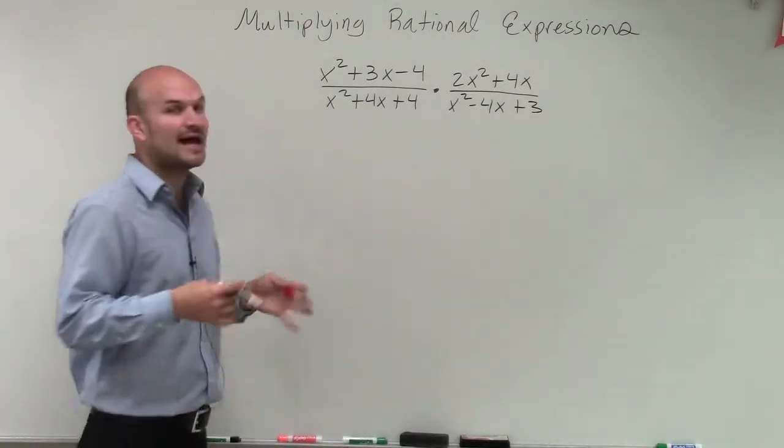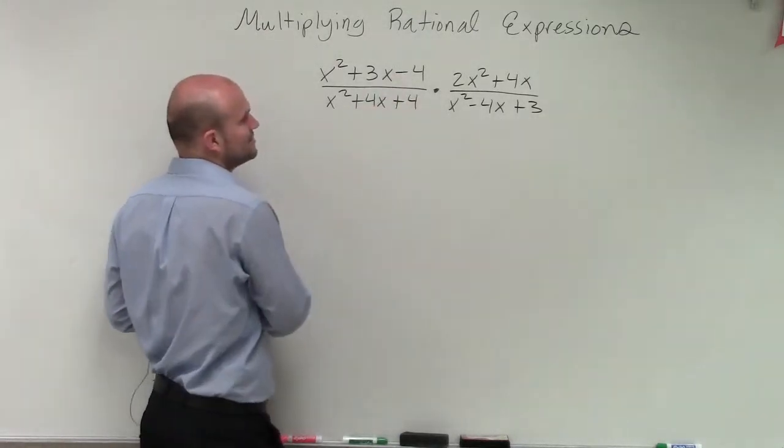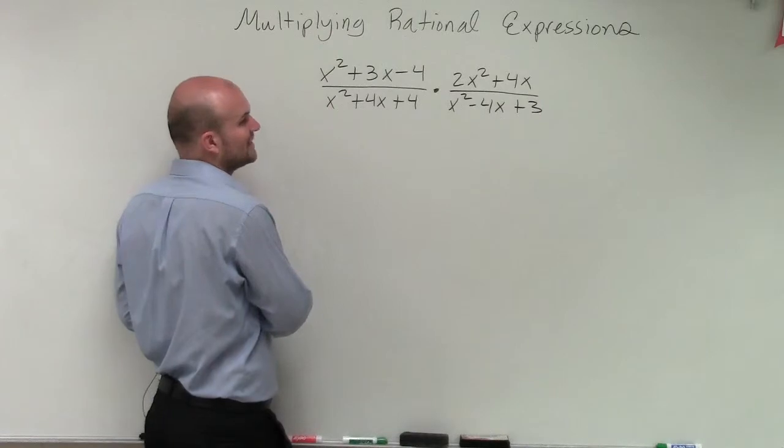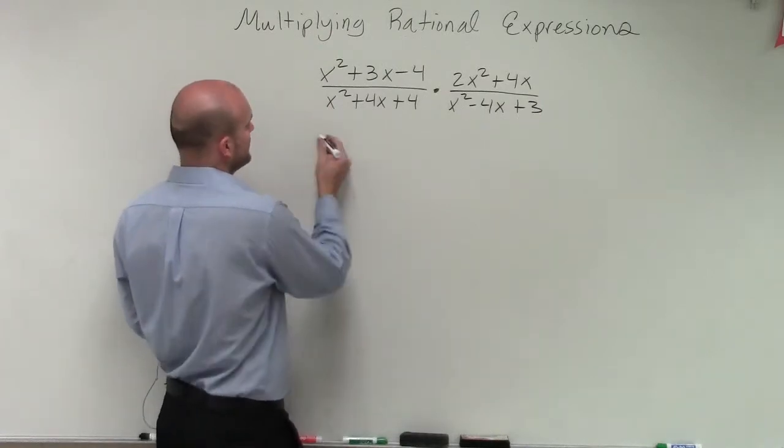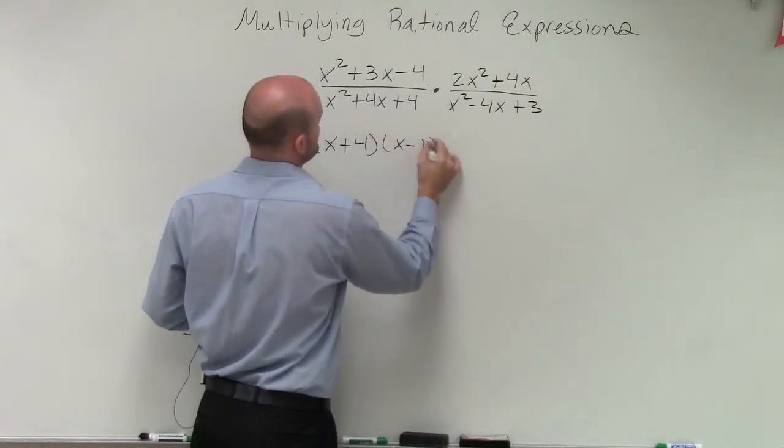And I'm just going to do this in my head, but I will say it out loud so hopefully you can follow along. So here I need to determine what two numbers multiply to give me negative 4, but then add to give me a positive 3. So when I factor that, that's going to be x plus 4 times x minus 1.